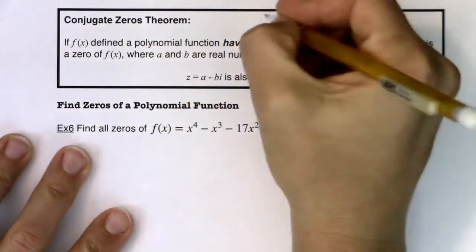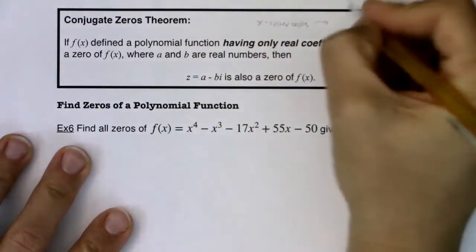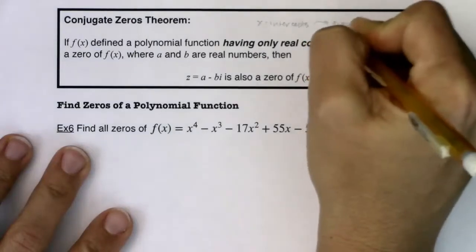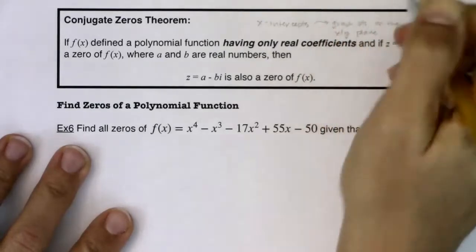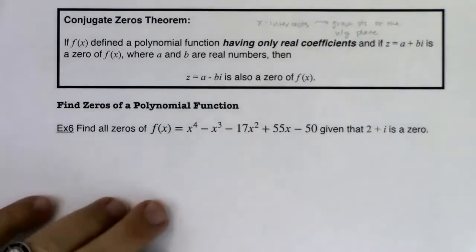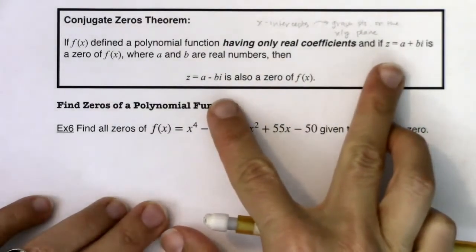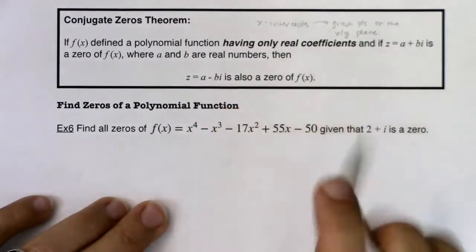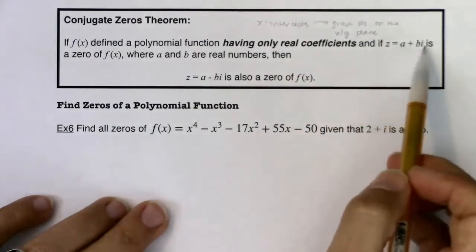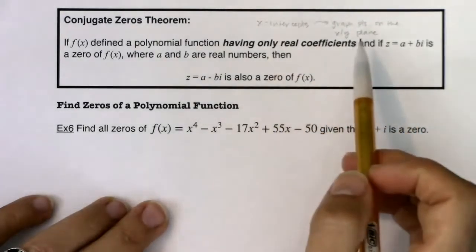When we talk about x-intercepts, this means I can graph these points on the xy-plane — on the xy or Cartesian coordinate system, just like we always have been. You have to have an x and a y coordinate. But we're going to branch into complex zeros, and here's where I'll start to really make the distinction: these are zeros and not x-intercepts. These values will zero out our function, but we can't graph them because they're imaginary. That's why I won't call them an x-intercept.